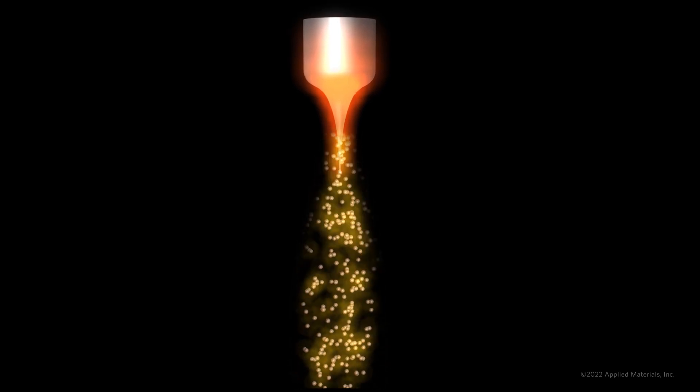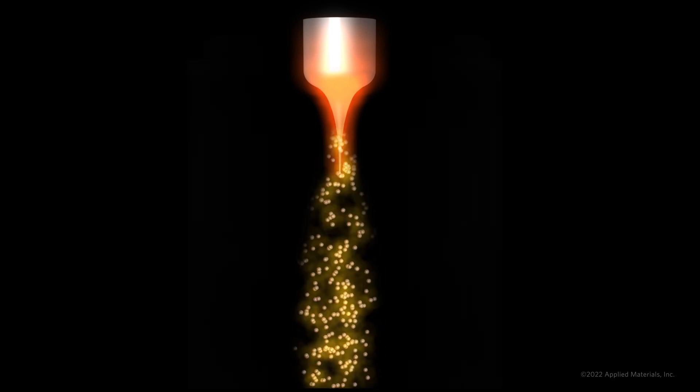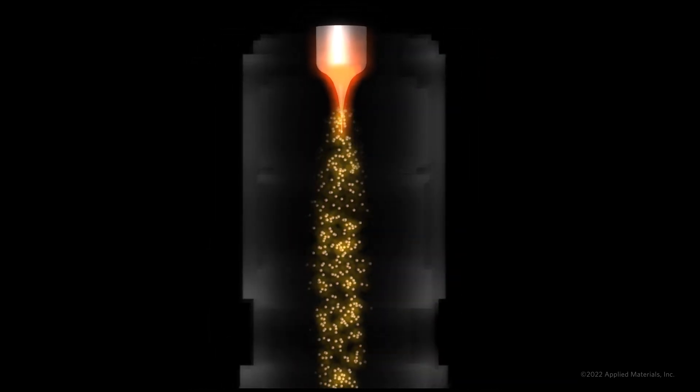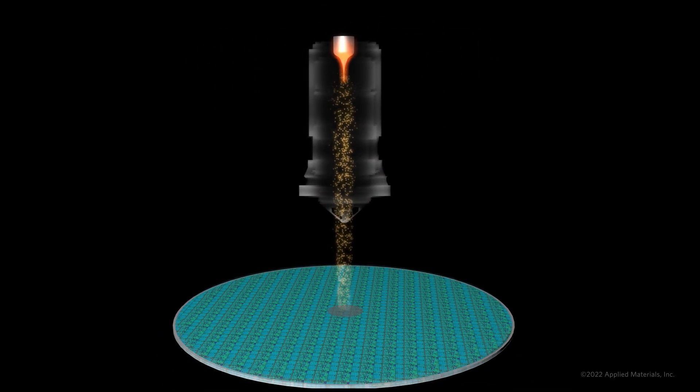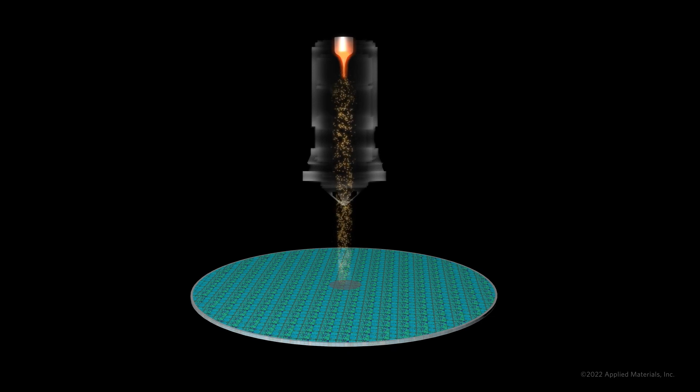As electrons are emitted from the source tip, a cloud of electrons is developed and shaped by electromagnetic fields within the column to form the e-beam. Once electrons exit the column and reach the sample, detectors capture any secondary or backscattered electrons to produce the image.